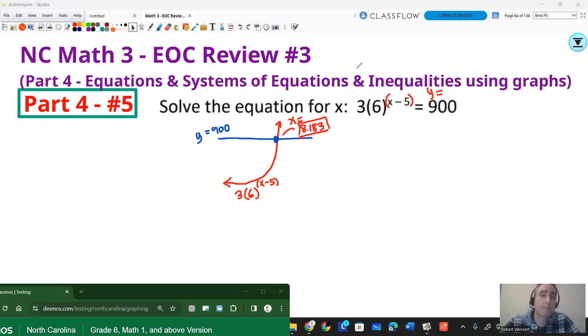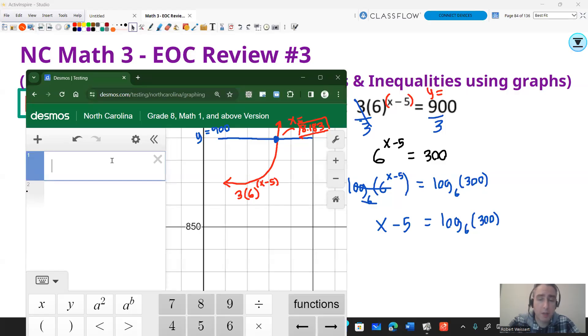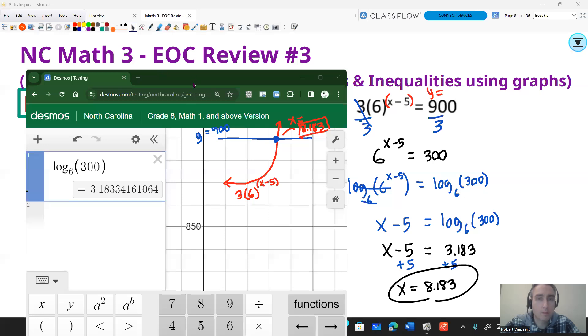For the curious, curious how you do it by hand. Step one, divide both sides by three. Step two, take the log base 6 of both sides. Step three, cancel out the bases. You're left with x - 5 on the left side equals log base 6 of 300. At that point, you may want to evaluate log base 6 of 300 using your calculator. You can do that in Desmos by doing log underscore, so shift minus 6, parentheses 300. And you get about 3.183. Last step, add 5 to both sides to get x by itself. x equals 8.183.